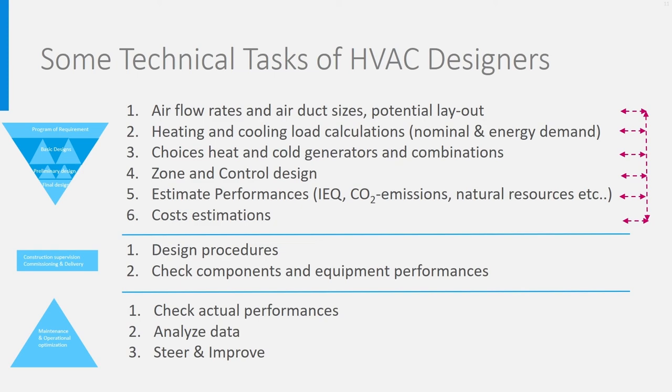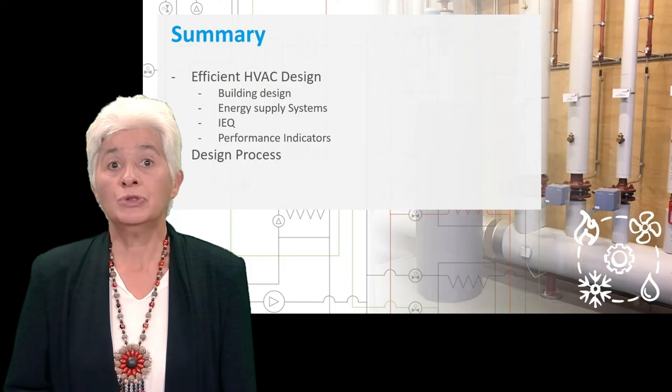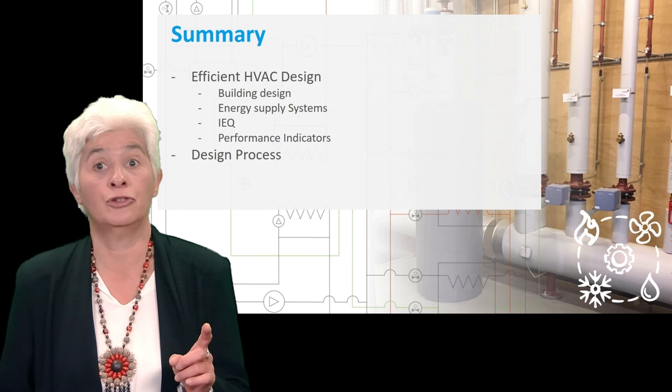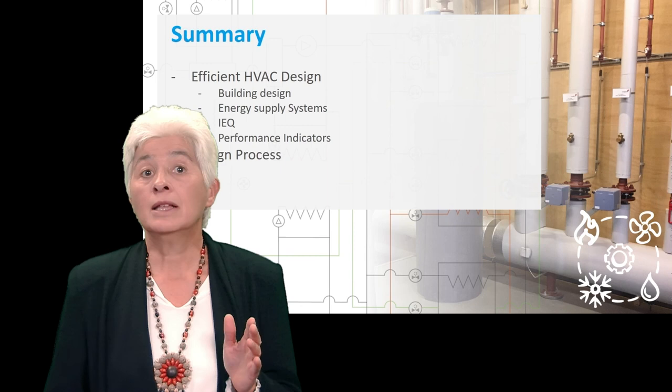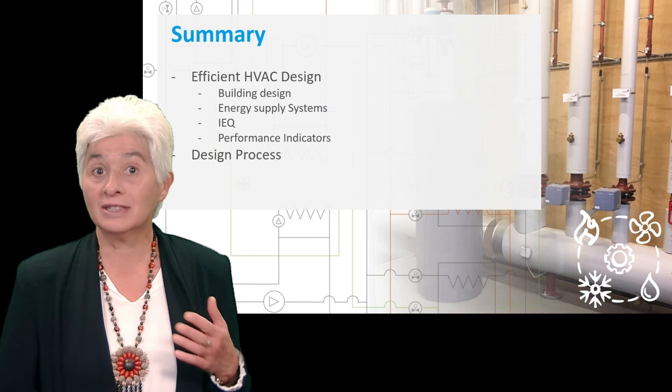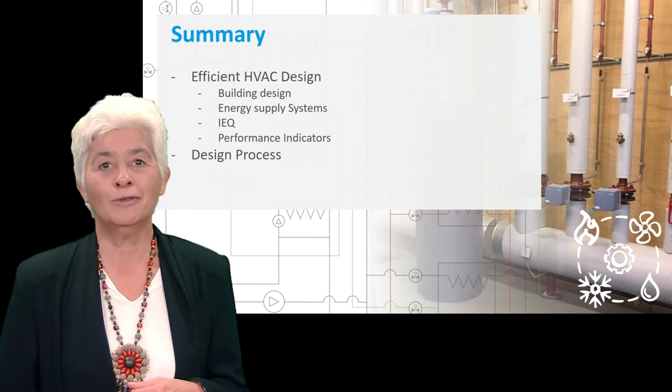In this lecture we have seen that to design efficient HVAC systems, a good thermal design of the building is needed, as well as the right choices of energy generators and much attention to indoor environmental quality. The right ingredients are needed to design further and efficient HVAC systems. We also discussed the performance indicators that can be used, and described how the design process works and what is involved with it. I hope you enjoyed it. Thank you very much for your attention.